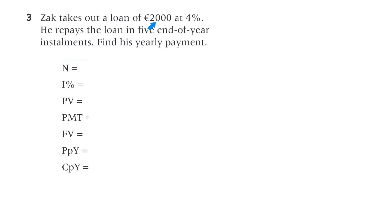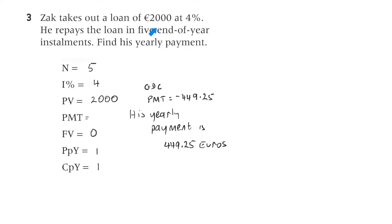Question three. Zach takes out a loan of 2,000 euro at 4%. He repays the loan in five end-of-year installments. Find his yearly payment. The present value is 2,000, the interest rate is 4% per annum, and N is 5 years. Since it's end-of-year installments, payments per year and periods per year are both one. The calculator gives a payment of 449.25 euros per year.